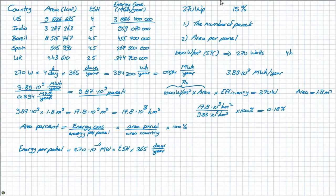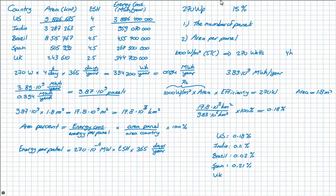Applying this calculation to all countries gives the following percentages: the US is 0.18%, India is 0.11%, Brazil is 0.02%, Spain is 0.21%, and the UK is 1.03%. Therefore, the country with the highest percentage of area needed to supply its own energy demand is the UK at 1.03%, and the country with the lowest is Brazil at 0.02%.